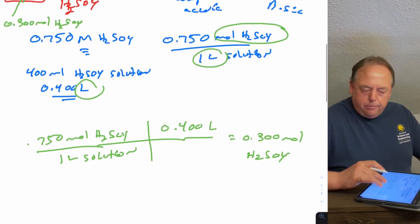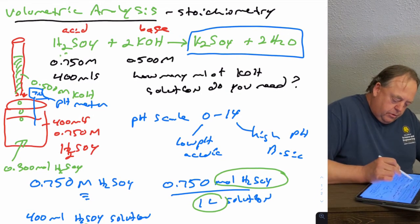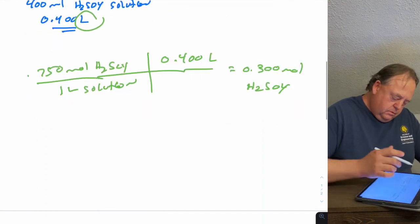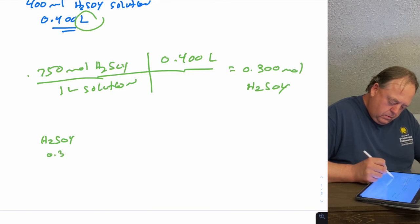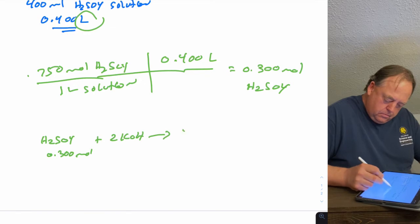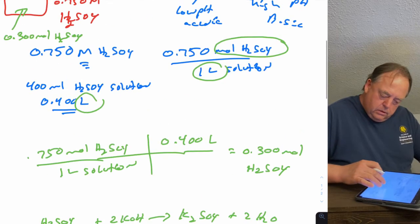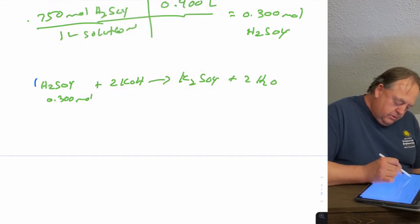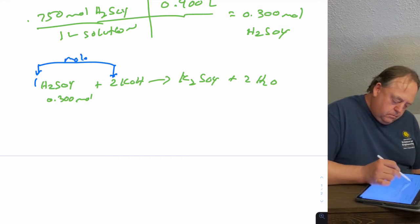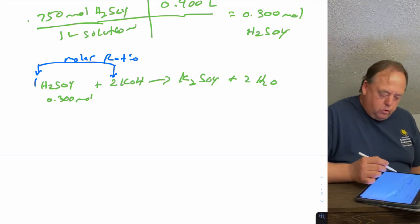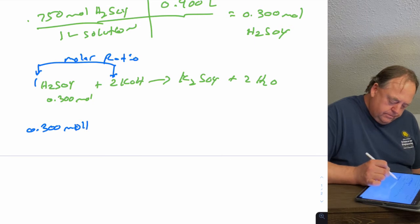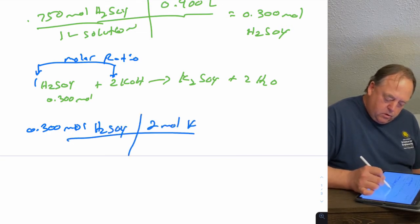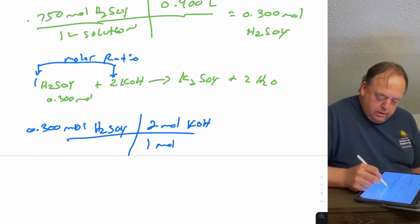Now at this point, it's a stoichiometry problem. You just calculated that you have 0.300 moles of this, and so now you can figure out how many moles of KOH do you need. If you remember how to do stoichiometry, now you need to use the mole ratio in the chemical equation. So 0.300 mole of H2SO4 will react with two moles of KOH for every one mole of H2SO4, so your moles of H2SO4 cancel out.